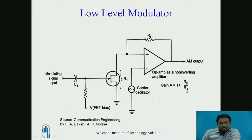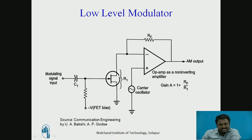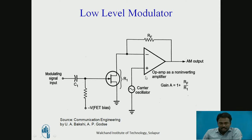The gain of the amplifier is 1 plus RF by R1. The modulating signal is controlling the resistance value of the field effect transistor. When the modulating signal is increasing from 0 to positive peak, the resistance of the FET decreases. When it is going from 0 to negative peak, the resistance of the FET also decreases. The carrier oscillator is connected to the non-inverting terminal of the operational amplifier.